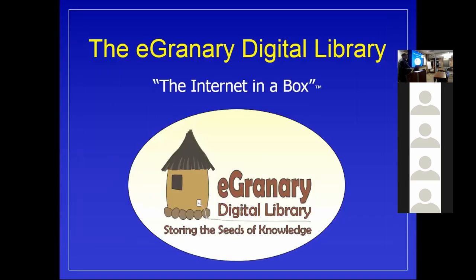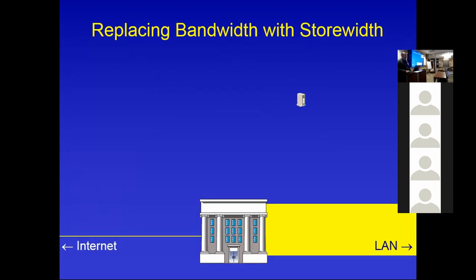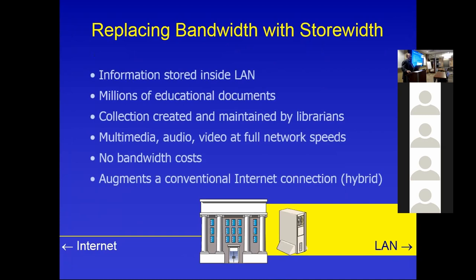So we developed the eGranary Digital Library — it's a hard drive, currently six terabytes, with 3,000 websites on it. The 'granary' in the African context is where people store their seed for next year's crop — always in the middle of the village, guarded against rats and birds. Because if they lose that seed, they lose next year's crop. The idea is to put information inside the institution so they can protect and manage their access to it. We're basically replacing bandwidth with store width — about 35 million documents put inside the organization for free and fast access.